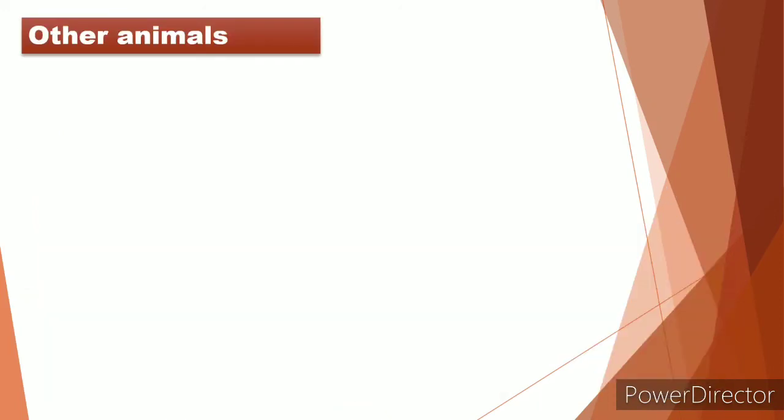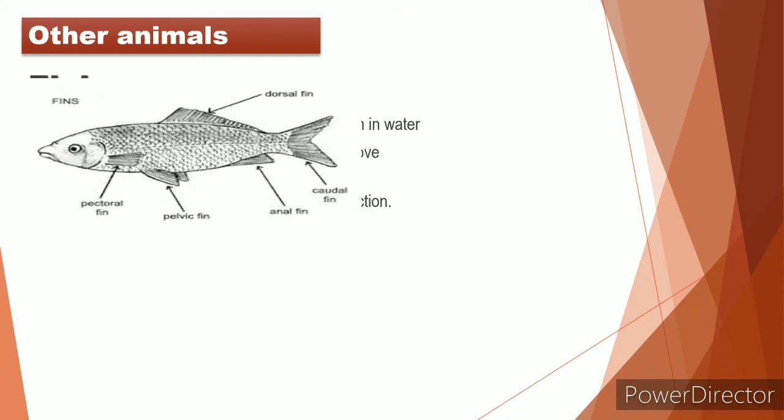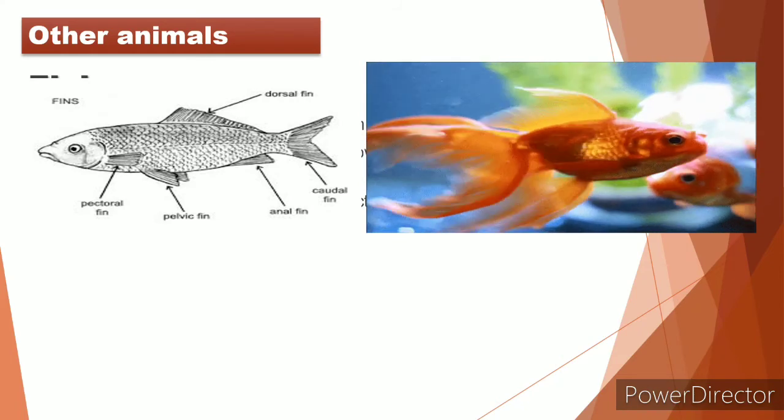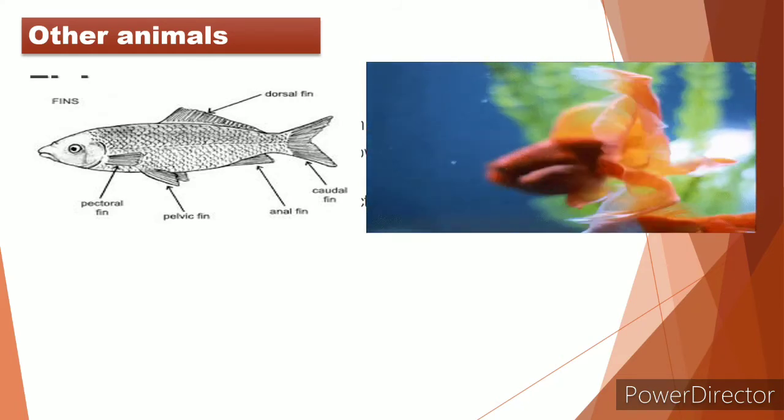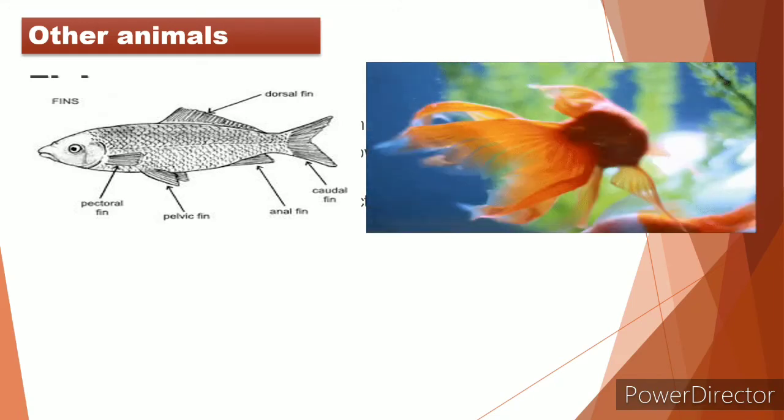Let's now talk about other animals like fish. Fish have pairs of fins. They move using their fins. See the picture and watch the position of the fins. They are flapping their front fins to move forward and backward.